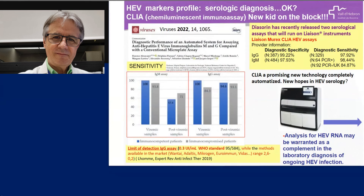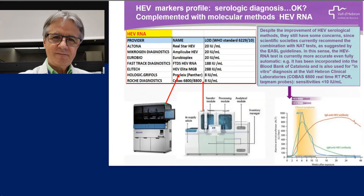The analysis of RNA may be warranted as a complement in the laboratory diagnosis of ongoing infection. Despite improvements in hepatitis E serological methods, they still have some concerns. Scientific societies currently recommend the combination of serology and RNA testing as suggested by EASL guidelines. Perhaps in the next version of these guidelines, this recommendation will change once the new features of serology are widely validated. There are very good, extremely sensitive methods for RNA testing — also on automatic platforms — such as the cobas from Roche, with incredible sensitivities around less than 10 international units per milliliter, incorporated in the Hospital Vall d'Hebron and Howard Hospital blood bank in Catalonia.